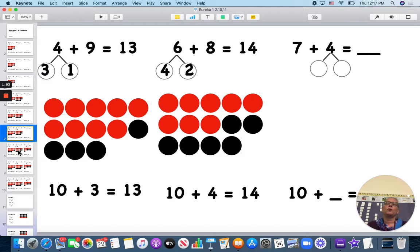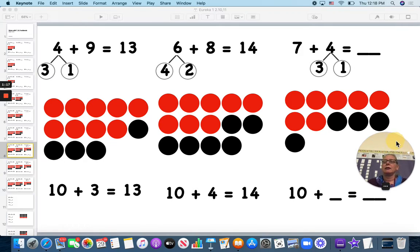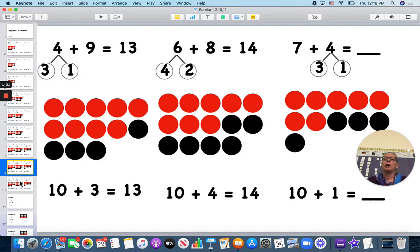Now we have 7 plus 4. So I'm going to do 7 and I'm going to add 4 more. These 3 are going to fill my 10 frame, put it together so that 3 can go with 7. 1 left over, 10 and 1 is 11. So 7 plus 4 is 11.